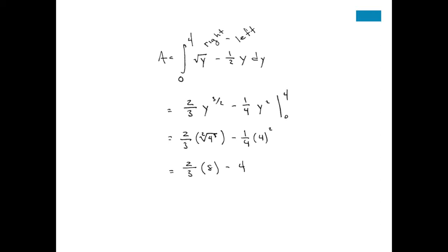So, we plug in. Remember, to the 3 halves means cubed and then square root. So, you cube 4, you get 64, take the square root of that, and you get 8. Or, you could do it the other way around. You could take the square root and then cube it. Either way. You get 8. 4 squared is 16, divided by 4 is 4. So, at the end, we should get 16 thirds minus 4, which is 4 thirds.